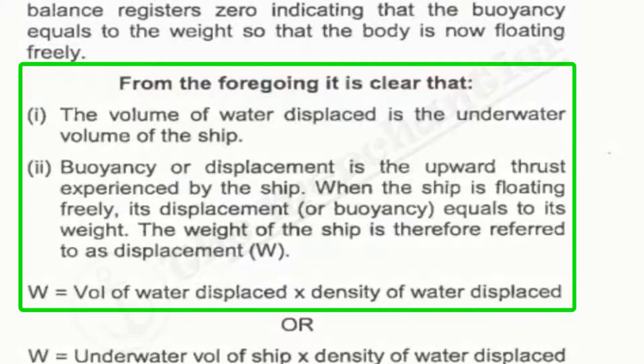And the second one is buoyancy or displacement is the upward thrust experienced by the ship. When the ship is floating freely, its displacement or buoyancy equals to weight. The weight of the ship is therefore referred to as displacement. So according to the second point, the first formula came: displacement equals volume of water displaced times density of water displaced. So this formula is not very hard to memorize. As we know that density equals mass per unit volume. Bas wahi formula hai, bas mass ki jagah pe displacement aa gaya hai.